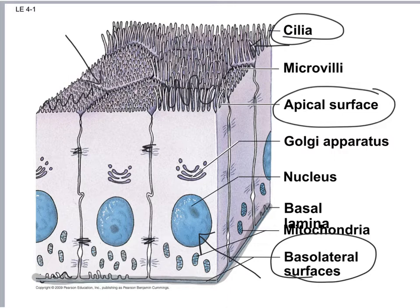Epithelial tissue is avascular — meaning there are no blood vessels leading into it. In many other tissues, blood vessels bring blood to the cells, but not in epithelial tissue. If you get a paper cut through just the top layer of skin — which is epithelial tissue — you won't get blood. You may get clear fluid, but no blood because there are no blood vessels there.